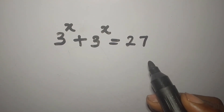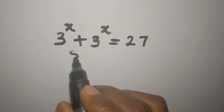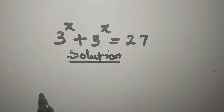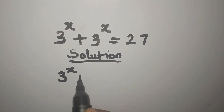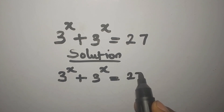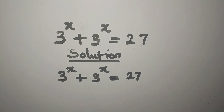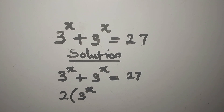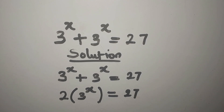Hello everyone, let's provide a solution to this problem very quickly. We have 3 to the power of x plus 3 to the power of x equals 27. The first thing to be done is to add these two terms, so if we do that we're going to have 2 of 3 to the power of x, and this is equal to 27.